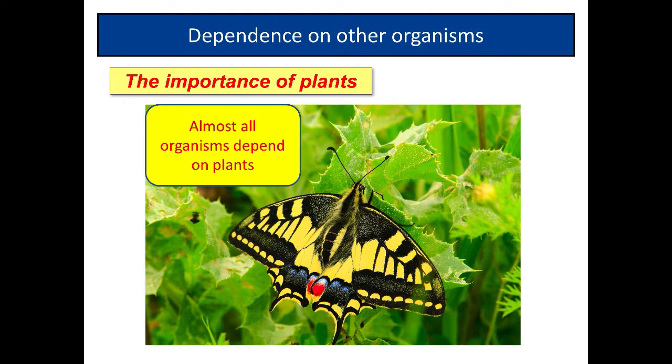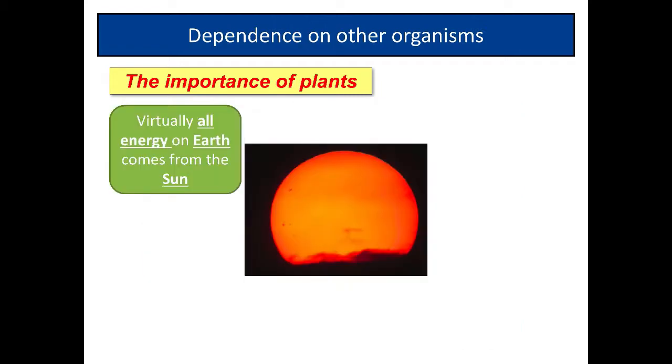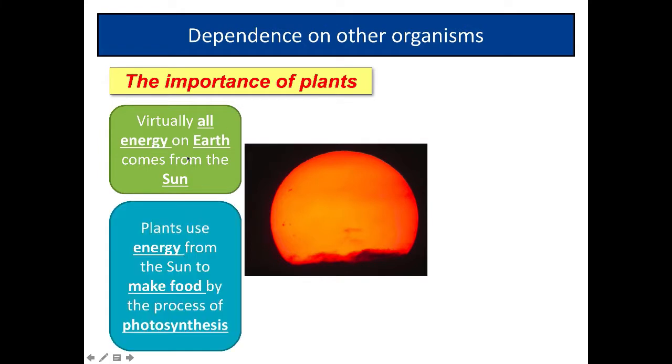At a very basic level, almost all organisms depend on plants. Why? The reason plants are so important is they trap energy from the sun. Virtually all the energy on Earth comes from the sun, and plants use this energy to make food.